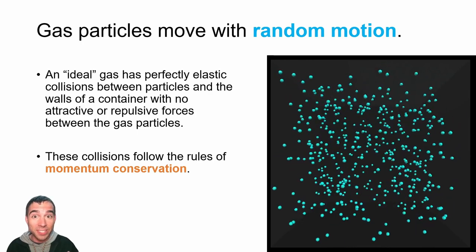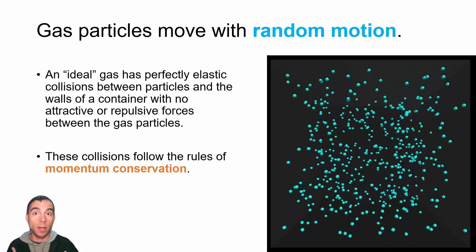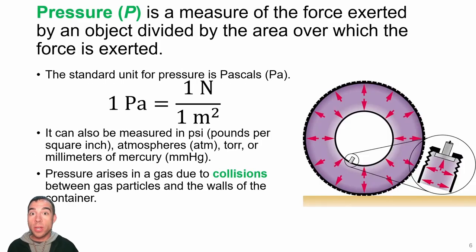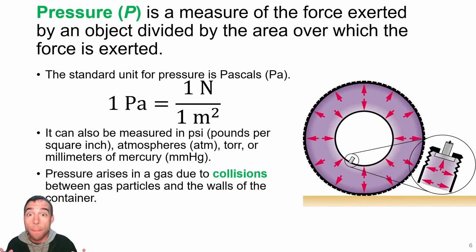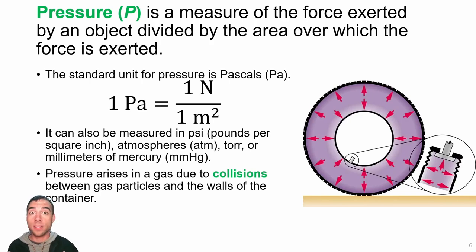Since there are collisions happening between gas particles and the walls, we can describe a property called pressure. Pressure is a measurement of the amount of force exerted over an area. Every time a gas particle crashes into the wall it exerts a force because it's changing its momentum — it has an impulse — and that force exerted over the area of the wall gives rise to pressure. The standard unit for pressure is the Pascal, which has units of Newtons per meter squared.